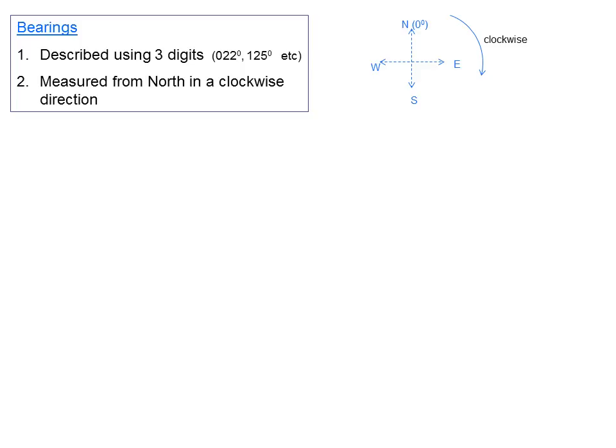Hi everyone and welcome to another math video from cxcdirect.org. Today our topic is bearings and we begin by describing what a bearing is. The bearing essentially describes the direction you will take if you are at point A and you want to get to point B. So it's a universal way of describing how you would define that particular direction. It is described using three digits and it is measured from north in a clockwise direction.